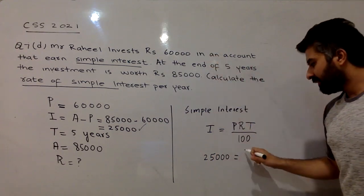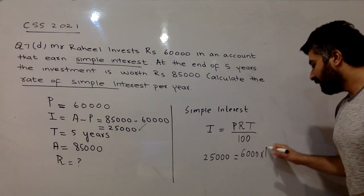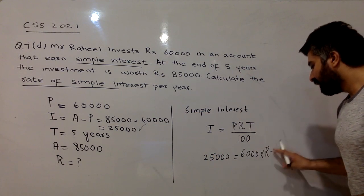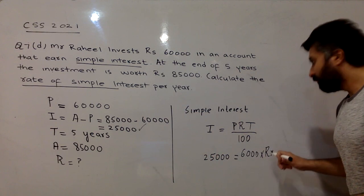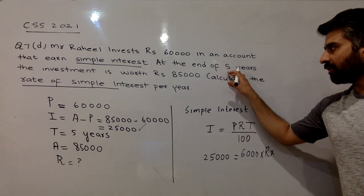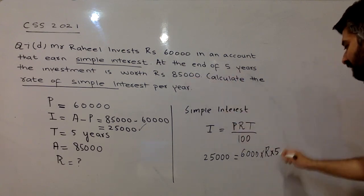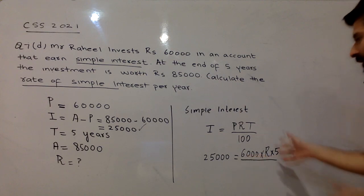The amount of interest is 25,000. R we have to find, the rate of interest. T, the time of investment, is 5 years. After 5 years the amount was withdrawn, 25,000 interest. So T is 5, the duration for which the amount was in the bank, over 100.